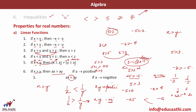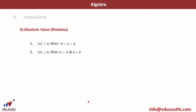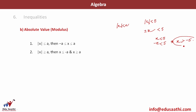Let's look at the absolute value function. For an absolute value function, if mod x is less than a — for example, mod x less than 5 — when I remove the modulus sign I use a plus-minus sign. I get x less than 5 and minus x less than 5. Rearranging the second gives x greater than minus 5. That means x belongs in the range minus a to a.